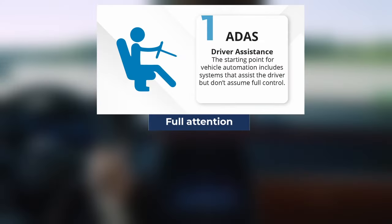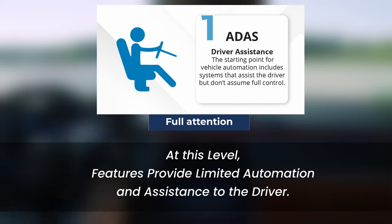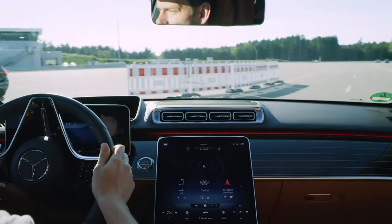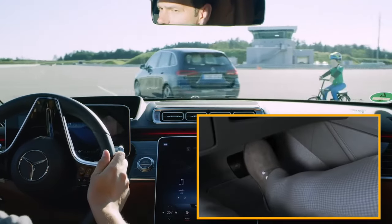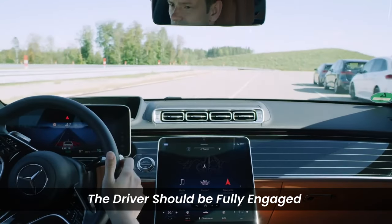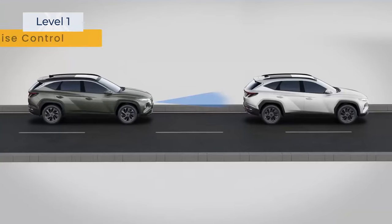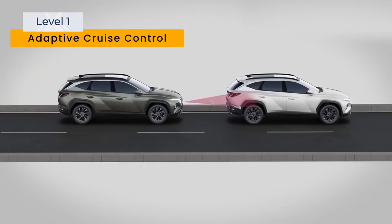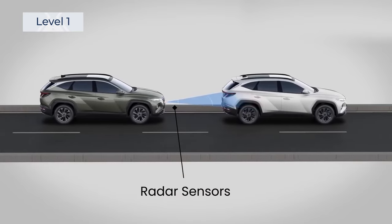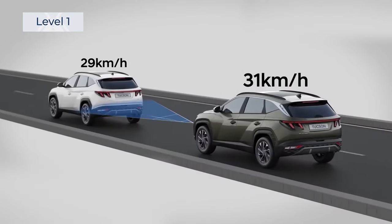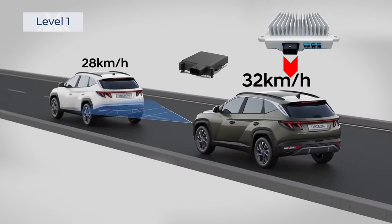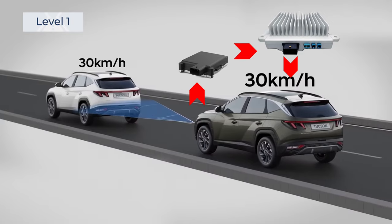Level 1 — Driver Assistance. At this level, features provide limited automation and assistance to the driver, typically focusing on a specific aspect of driving, requiring the driver to remain fully engaged. An example is Adaptive Cruise Control, which uses radar sensors to maintain a set speed and automatically adjusts it to keep a safe distance from the vehicle ahead. The control unit processes the sensor data and commands the actuators to control the vehicle's speed.